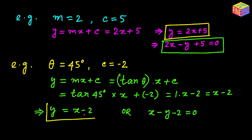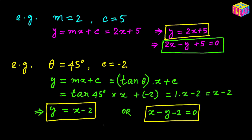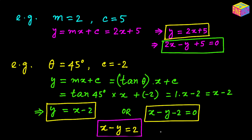You can also write it as x minus y minus 2 equals 0, or as x minus y equals 2 — keeping x and y terms on the left-hand side and the numeric on the right. Any of these formats is fine; they all represent the same straight line. You can use y equals mx plus c format, everything on the left with zero on the right, or x and y on the left with numerics on the right. I hope everything made sense — thank you for watching, see you in the next video.